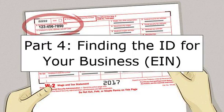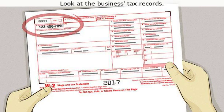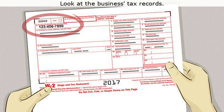Part four: finding the ID for your business, EIN. Step one, look at the business tax records. Every W-2 a business sends to its employees lists its employer identification number, EIN. Find a W-2 from any year and look in box B, near the top left corner of the page. Any other tax documents the business has filed should also include the EIN, usually near the top of the first page. A business switches to a new EIN if it goes bankrupt, changes ownership for sole proprietorships or partnerships, or has a major change in organization — for instance, it incorporates or merges. Do not rely on forms from before one of these events.